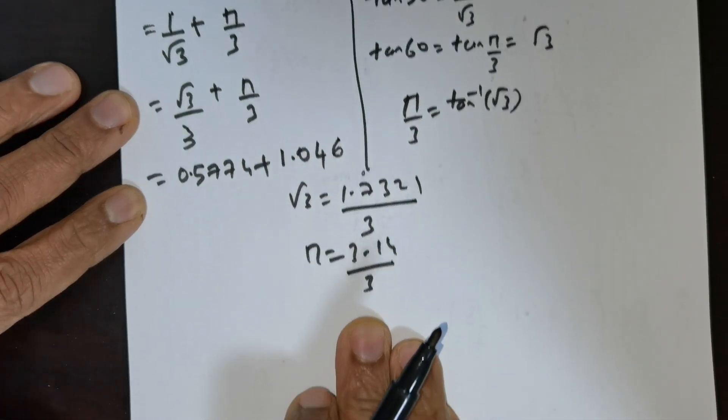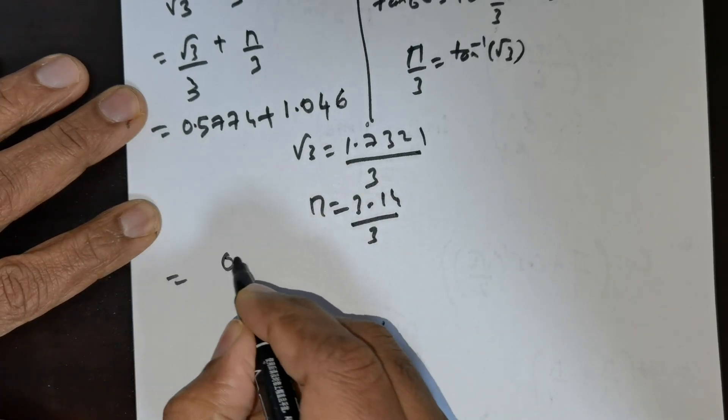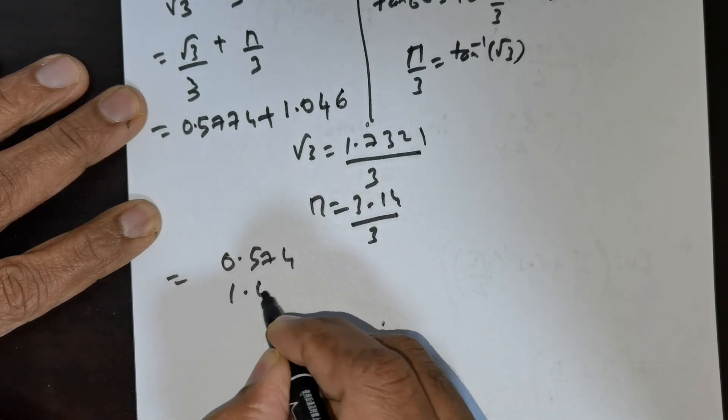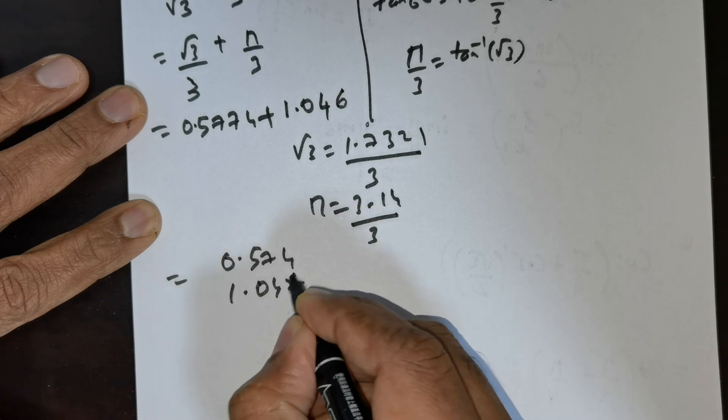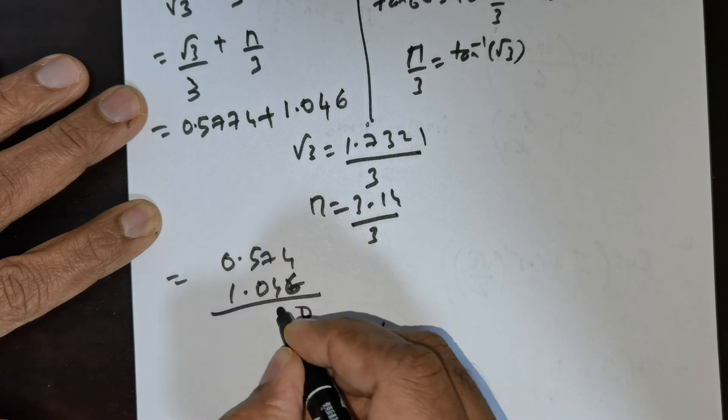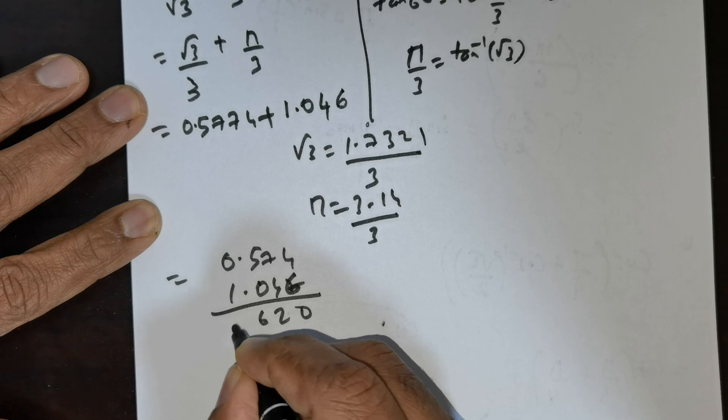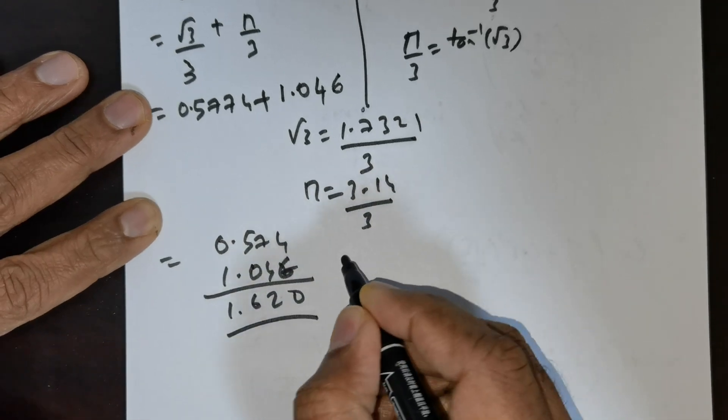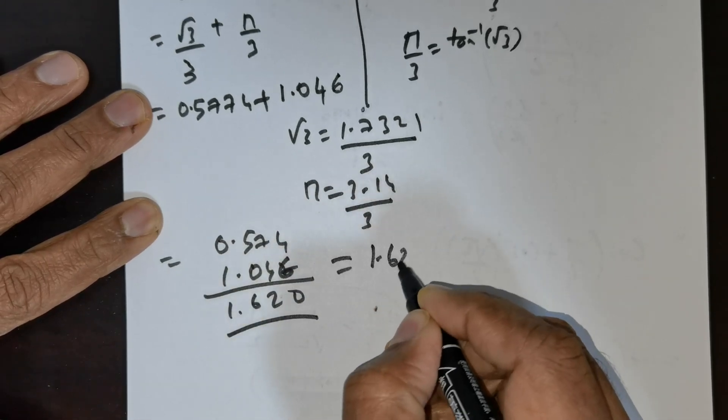What you do is you add up these two things: 0.5774 and 1.0446. So 10, 1, 8, 12, 1, 6, and then 1 point. So the value is going to be 1.62.